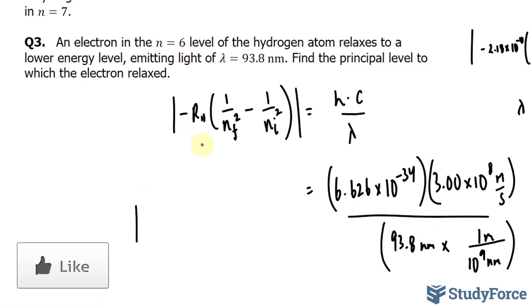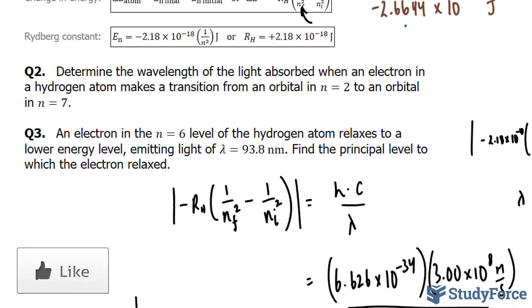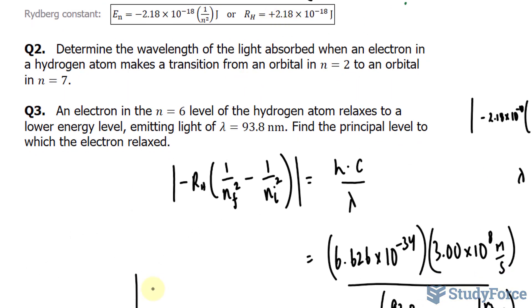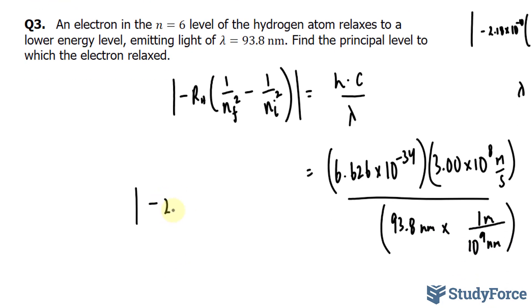Now on the left side, we have r sub h. That's Rydberg's constant. We'll use this. We have negative 2.18 times 10 to the power of negative 18. That's being multiplied to 1 over nf squared. That's what we're looking for. And for here, I'll write down 1 over 36 because 6 to the power of 2 is 36.